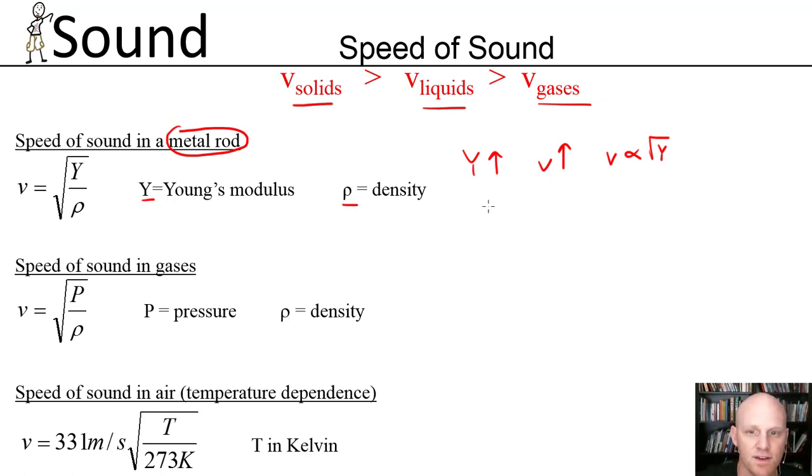We also see a relationship with density. In this case, density rho. As density increases, your speed of sound is going to decrease. There's some sort of inverse relationship. They're not inversely proportional, but there is an inverse relationship. We see that your velocity of sound is proportional not to one over your density, but to the square root of one over density.